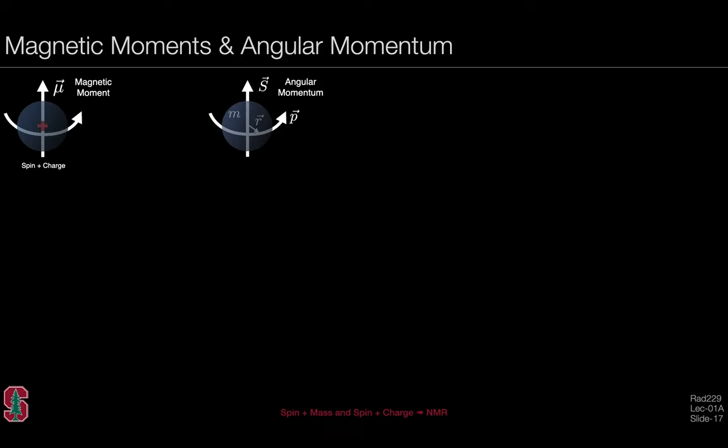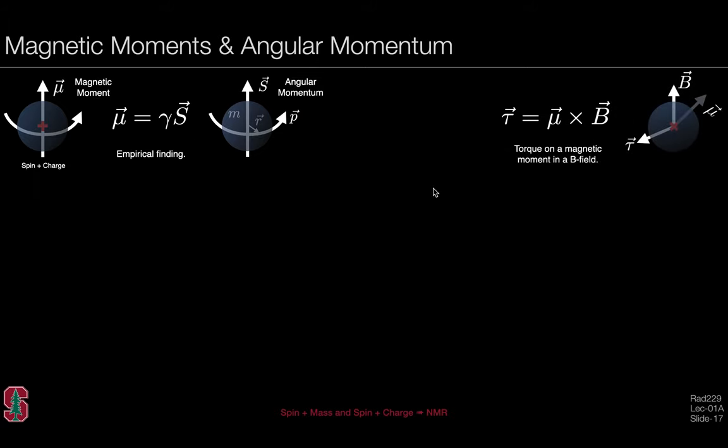We've been leading up to where the Larmor equation actually comes from. We remember that the hydrogen nuclei have both magnetic moments and spin angular momentum. The magnetic moment arises as a consequence of spin and charge, meaning it behaves like a small magnet. The angular momentum arises as a consequence of both spin and mass. We have this empirical finding that relates these two measures: the magnetic moment being equal to the gyromagnetic ratio times the spin angular momentum. We also remember that a magnetic moment placed inside an externally applied B field will have a torque exerted on it. These two relations will come together to help us understand the equation of motion.